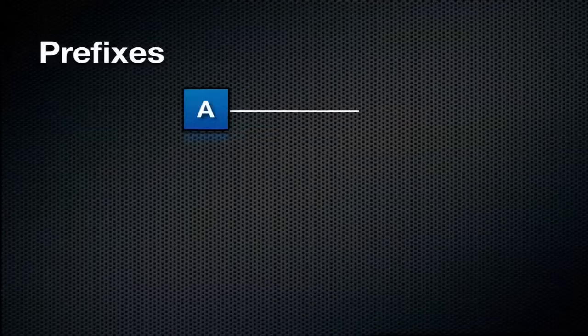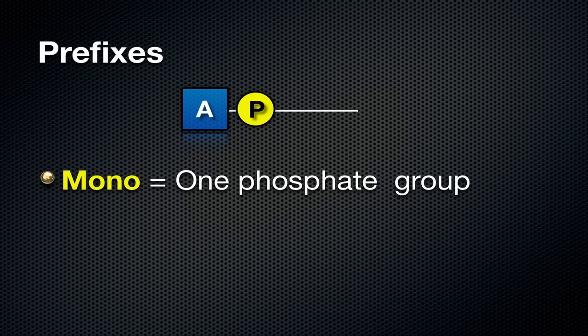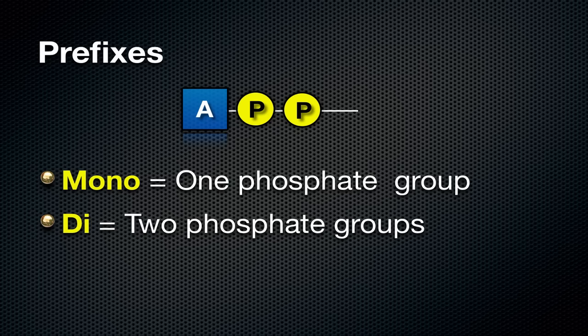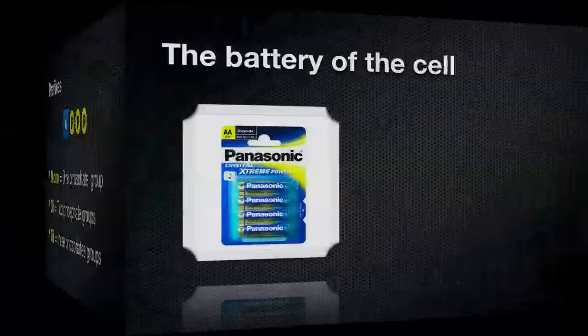ATP stands for adenosine triphosphate — just like a tricycle has three wheels. Let's look at three prefixes. First, adenosine monophosphate: mono refers to one phosphate group. Next, adenosine diphosphate: di means two phosphate groups — note it's diphosphate, not biphosphate like a bicycle. And lastly, adenosine triphosphate has three phosphate groups. So we have mono, di, and tri — you should be able to explain what those three prefixes mean.